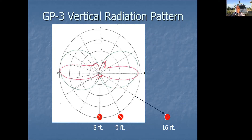Comet's engineers sent me the vertical radiation patterns for the GP3, 6, 9, and 12. The pattern shows two curves: the green one for two meters and the red one for 70 centimeters. The outside ring is your published maximum gain. The first inner ring is 3 dB down, next is 6 dB down, next is 12 dB down. For most ground plane verticals, there's virtually no radiation going straight down or straight up — the person directly below the antenna is in negative gain territory, about minus 15 dB.